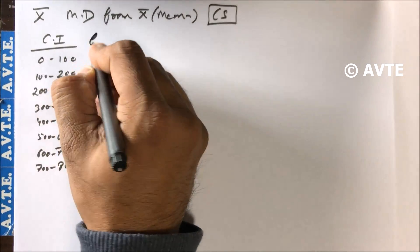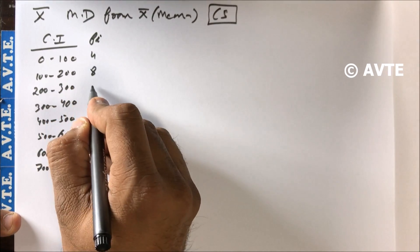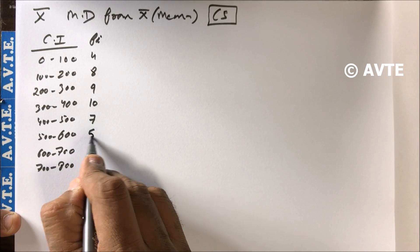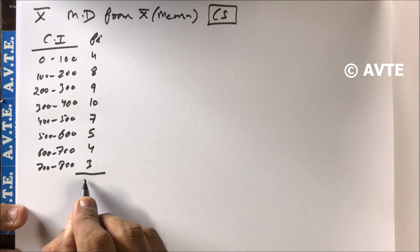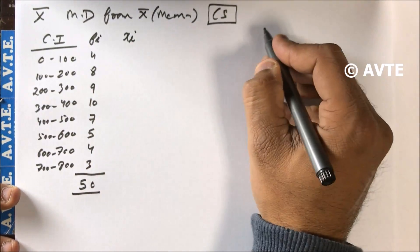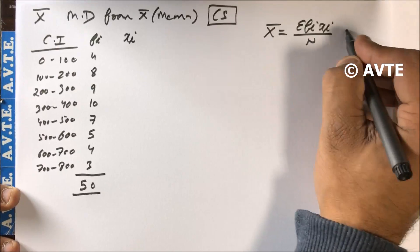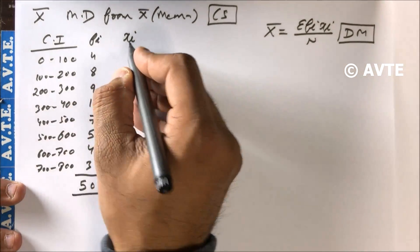We have frequencies: 4, 8, 9, 10, 7, 5, 4, 3. The total frequency is 50. We have to find mean deviation from mean. We find the mean first using sigma fi·xi upon sigma fi — the direct method shown in previous videos. Xi is the class mark: upper limit plus lower limit divided by 2. The class size is 100.